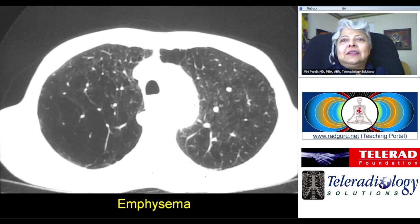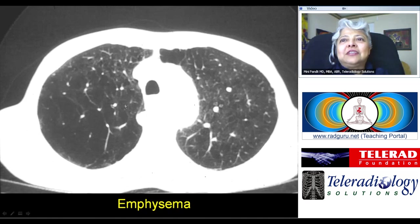A run-of-the-mill smoker with emphysema, bullous changes in the right apex, not so bad on the left side. This is heterogeneous lung caused by emphysema.